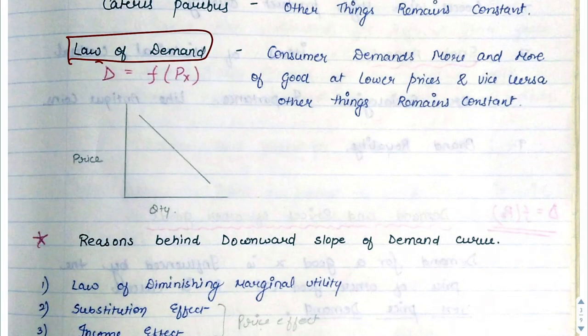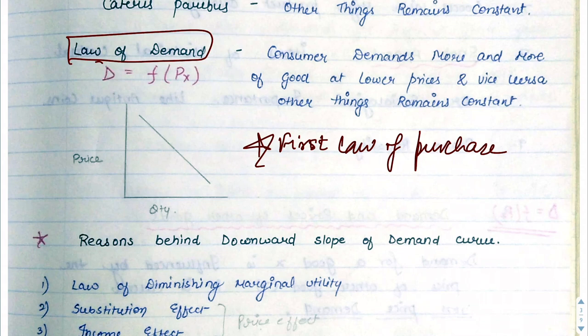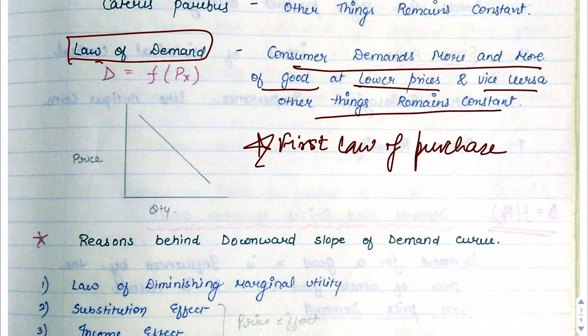Next is the law of demand — also called the first law of purchase. Suppose the price of an ice cream is 10. If the same ice cream is now priced at 5, you would buy two instead of one. Because the price decreased, our demand increased. Consumer demands more goods at lower prices and vice versa, other things remaining constant. This is the law of demand.